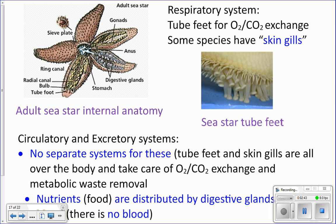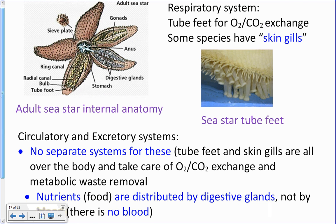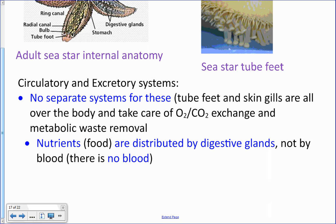Some species also have skin gills — on the top of their arms they have little feathery structures that stick up and also aid in respiration, exchanging carbon dioxide and oxygen. The left picture shows the internal anatomy of a starfish. For circulation and excretion, there are no special systems for these two functions. The tube feet and skin gills are distributed all over the body, taking care of oxygen and carbon dioxide exchange.